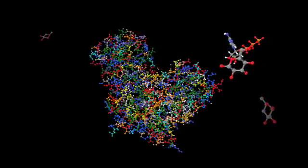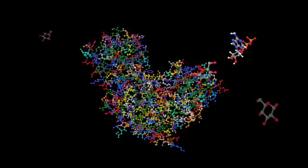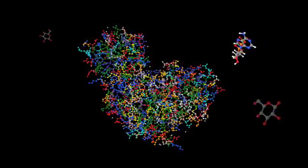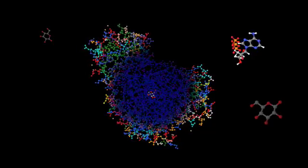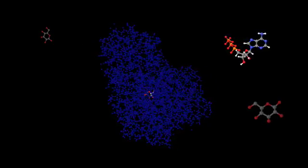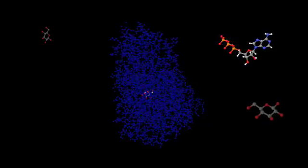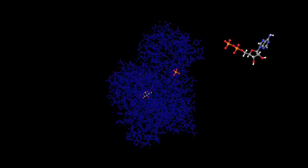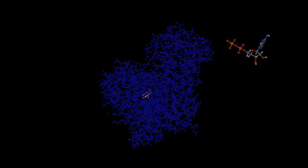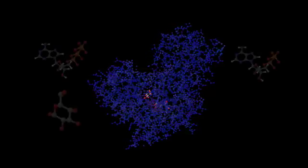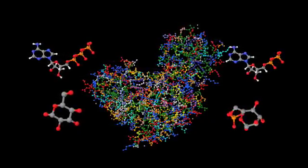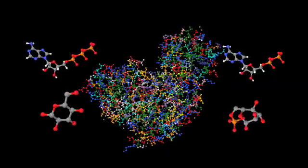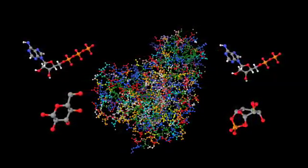Hexokinase captures a glucose molecule in its active site and holds it in just the right orientation like a robot arm might do in an automobile assembly line. It then takes the last phosphate group from an ATP molecule and attaches it to the glucose. Glucose and ATP go in, and glucose 6-phosphate and ADP come out.